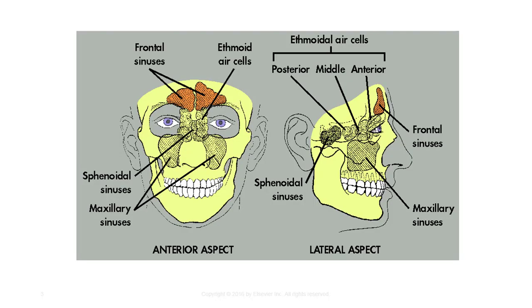The frontal sinuses are paired. They are located between the vertical plates of the frontal bone and vary greatly in size and shape. It should be noted that they are occasionally absent and rarely symmetric.